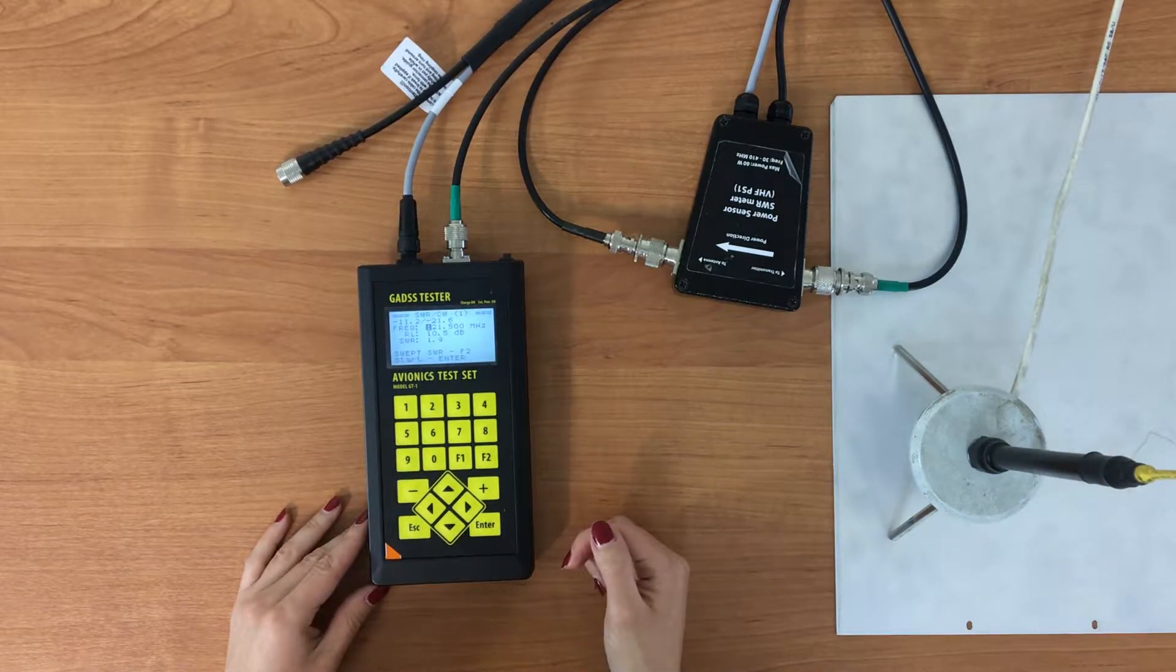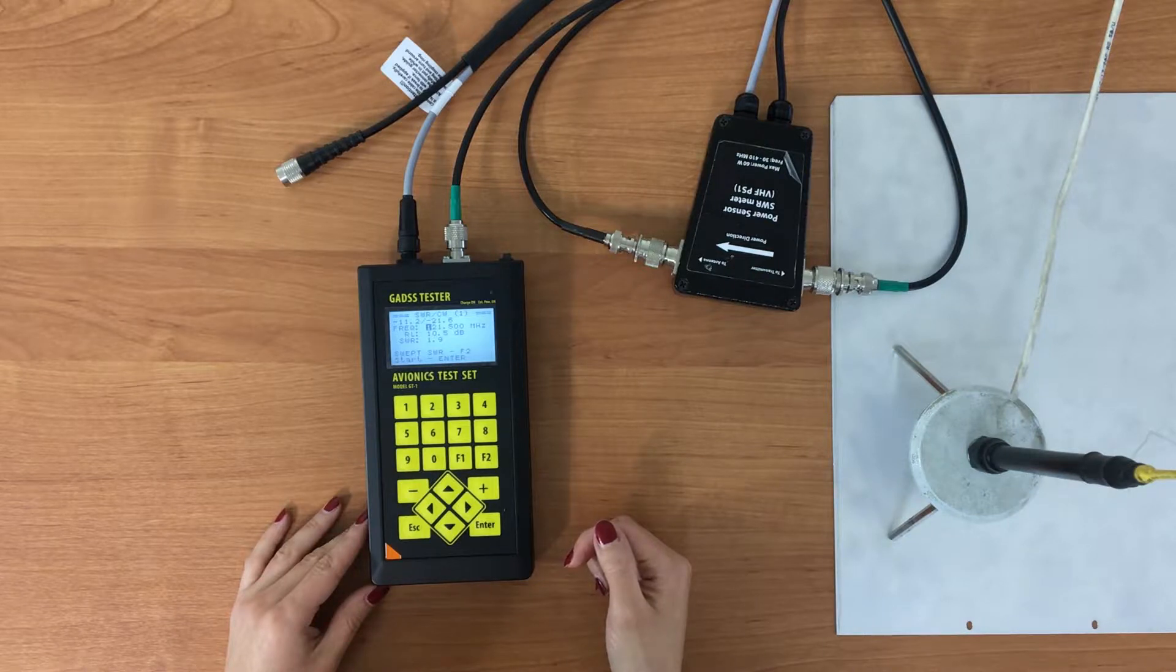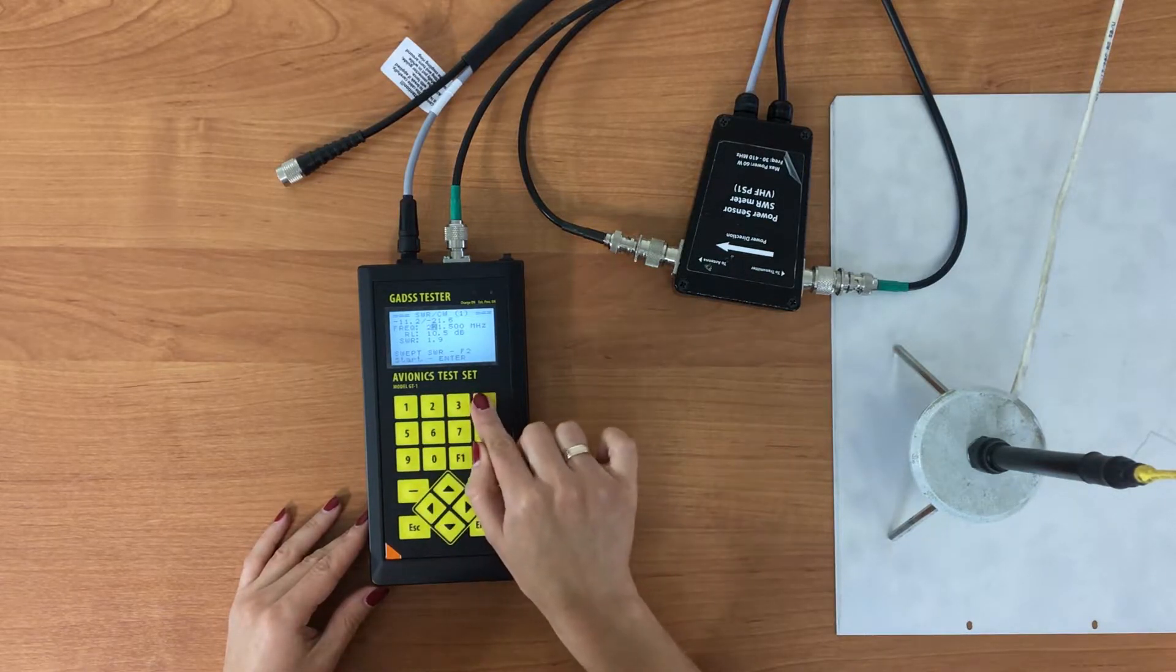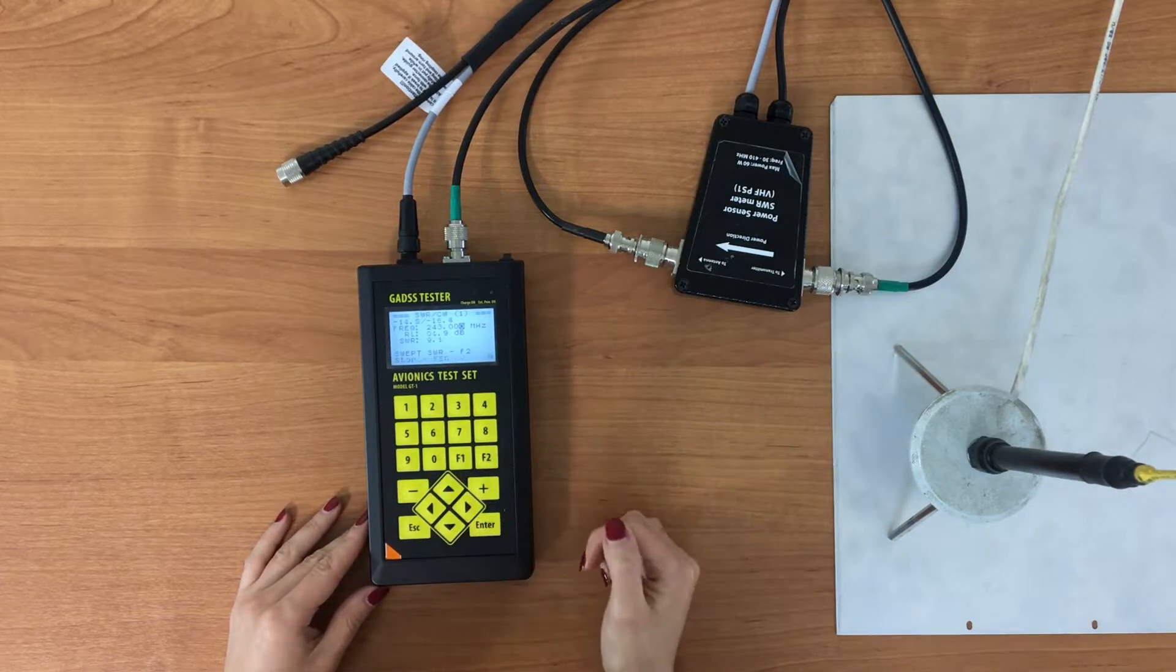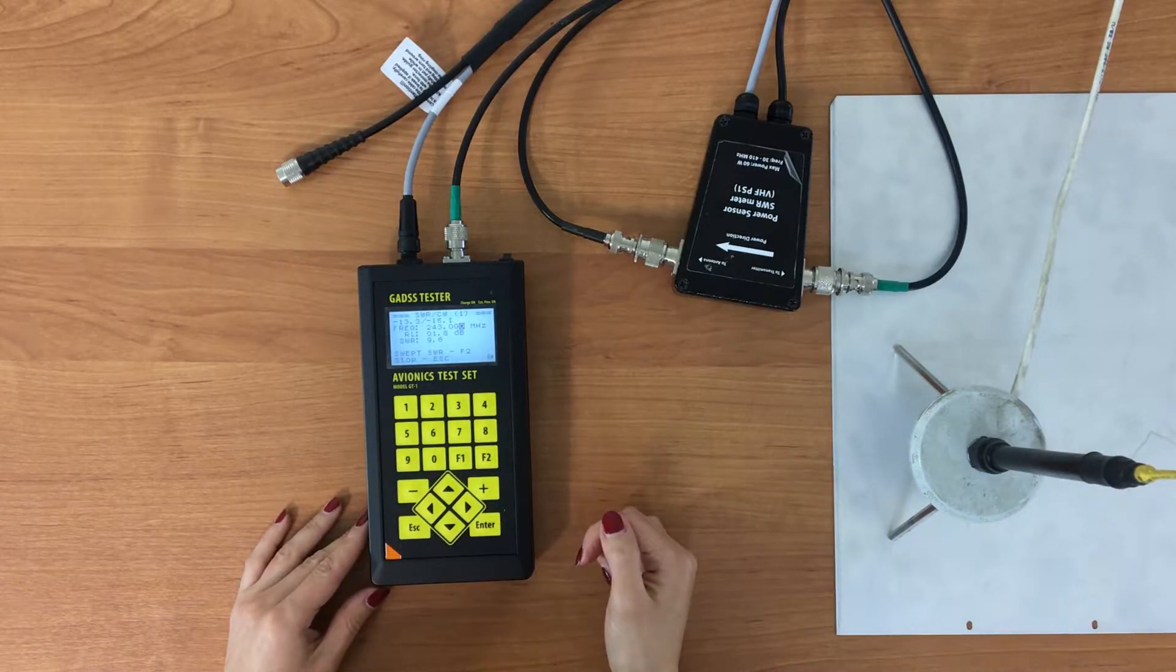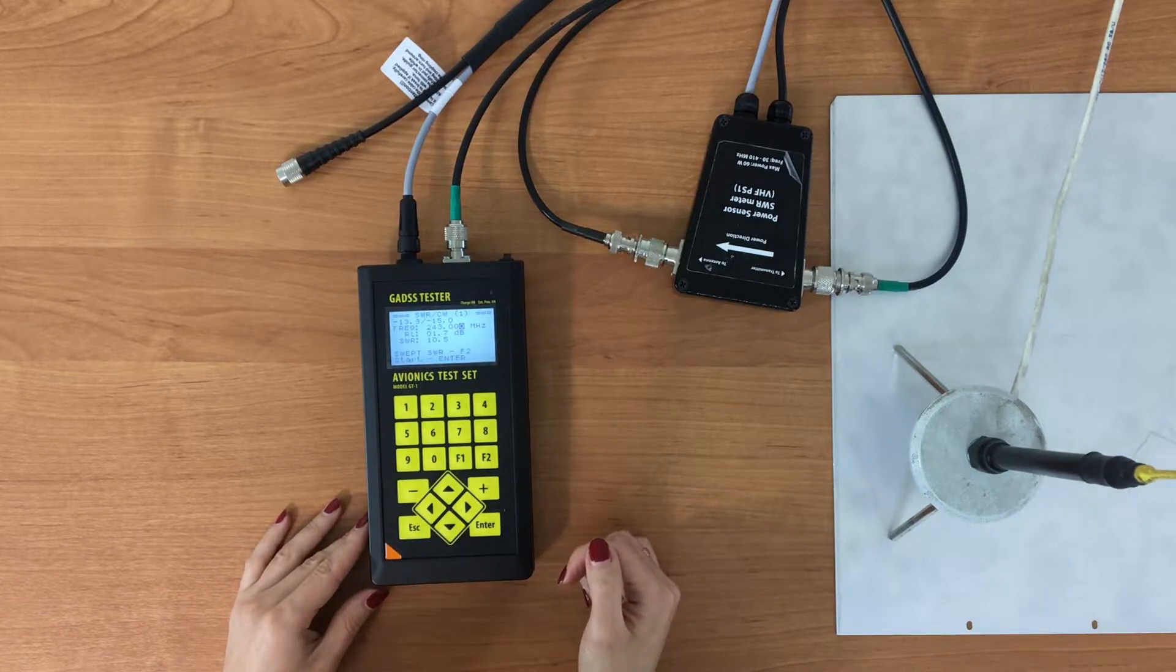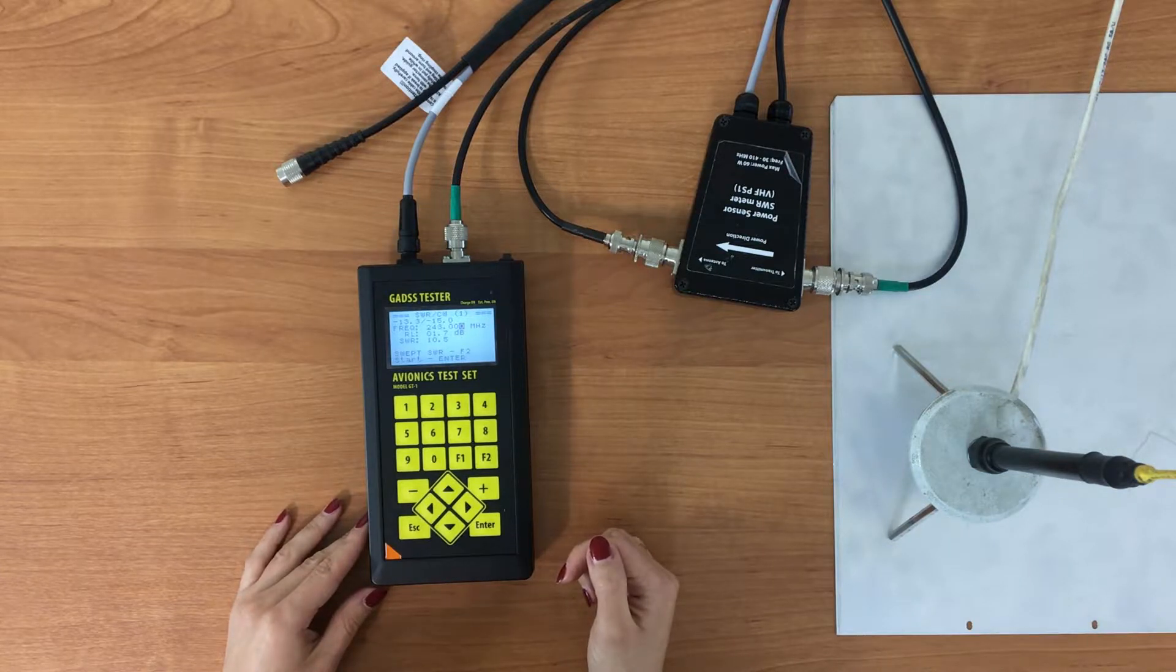Finally, we do the same for 243 MHz frequency. Here is the SWR result for 243 channel. It is very high.